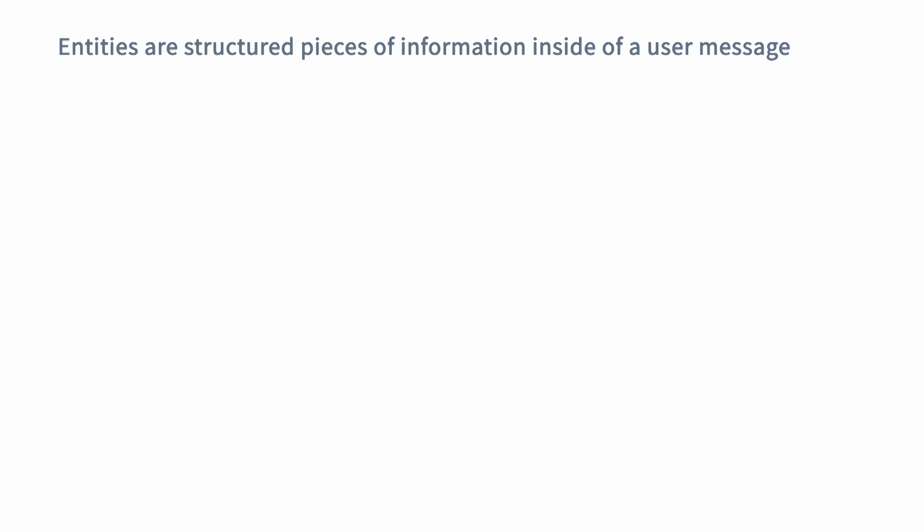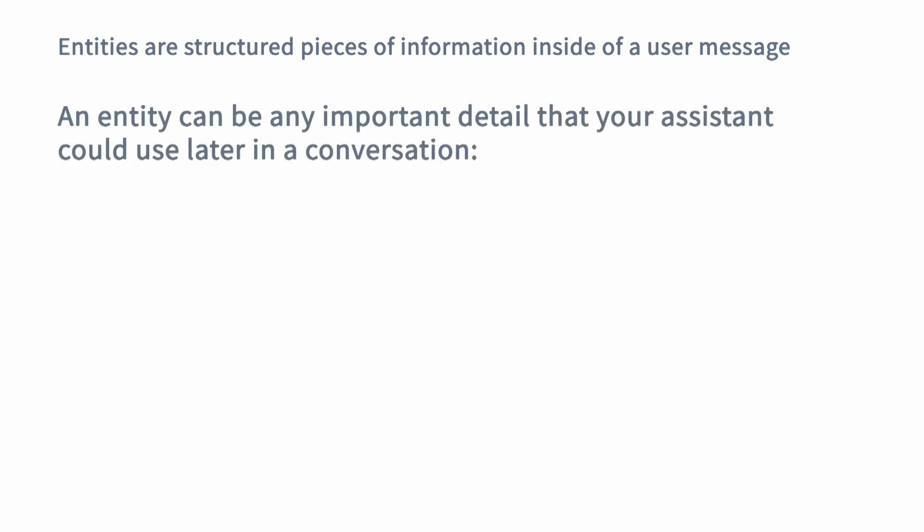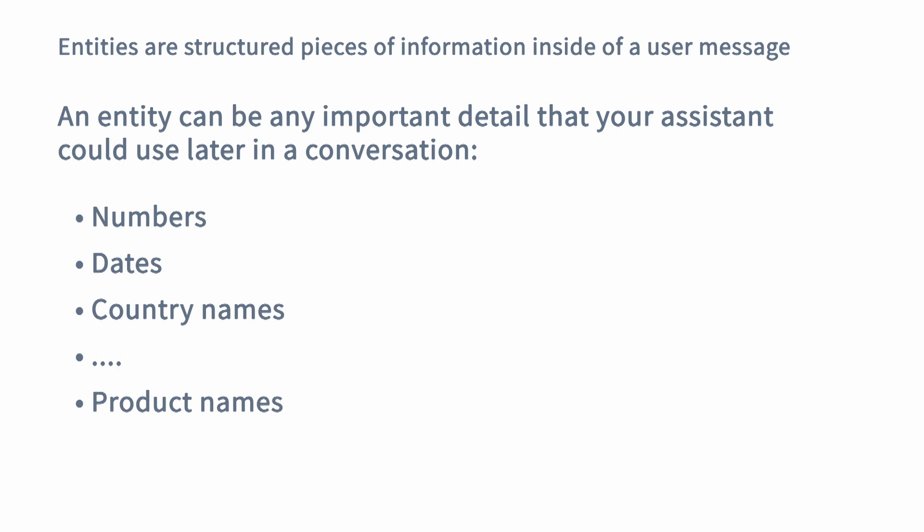Entities are the pieces of information that your assistant can extract from user inputs. Those details can help your assistant to better understand what is being asked and later on use those details in a specific context when responding back to the user or running specific actions. The most common examples of entities are details like numbers, dates, country names and similar. But an entity can really be any kind of piece of information that is relevant and important to your assistant.